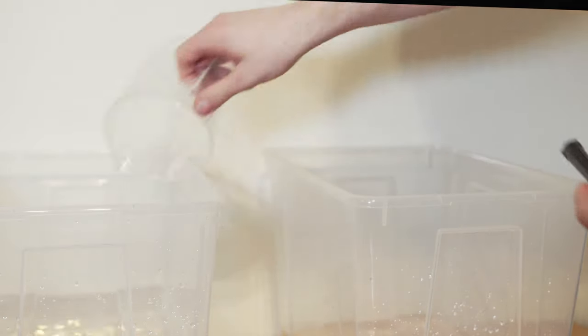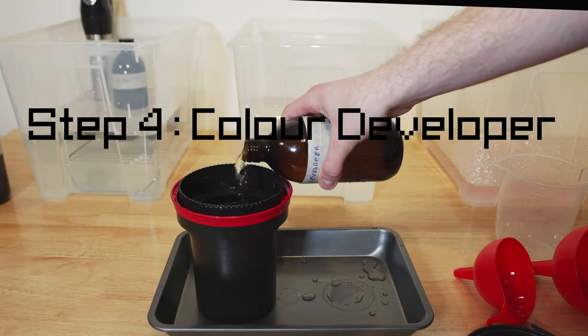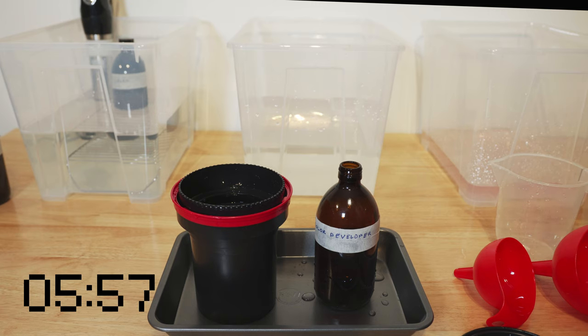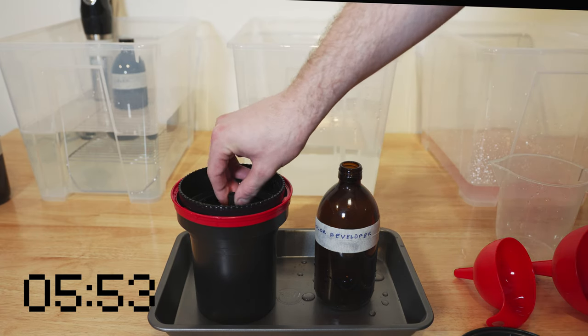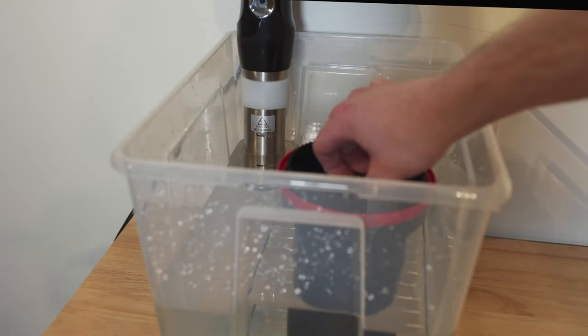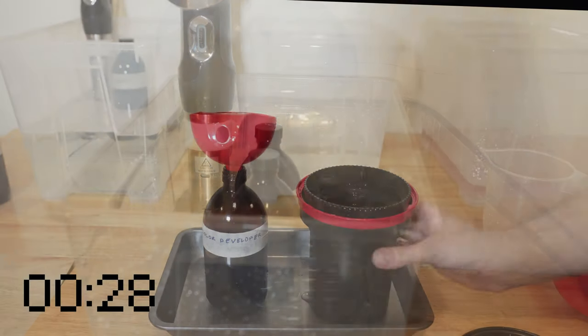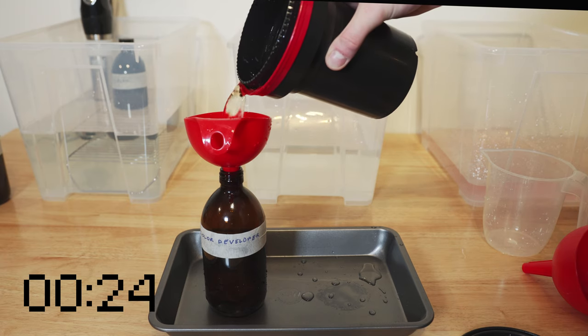Next up is the color developer step, so we're going to pour it into the tank. When we're finished pouring, we'll start our timer for six minutes. This time I will agitate the tank for the first minute and then I'll put the tank in the water bath and agitate for 10 seconds every minute, exactly the same as the first developer. Once again, 30 seconds before the timer finishes, we'll take the tank out of the water bath, pour it back into the color developer bottle, and then we proceed to do our second washing phase.